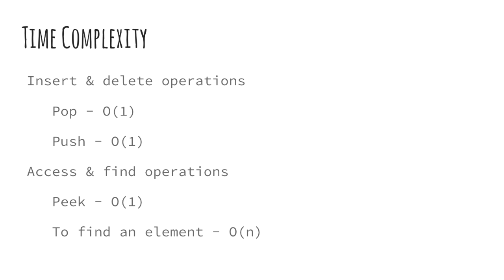To discuss the time complexity, the insert and delete operations are constant time in stack. The access and find operations: the peek operation is also constant time. To find an element in stack is not a constant time operation. Remember, stack is a sequential data structure, so the search within a stack is also linear. If we wish to find a particular element in a stack, we have to search sequentially from the top. In the worst case, we may need to search the complete stack. If there are n elements in the stack, then the time complexity of such a search would be O(n).